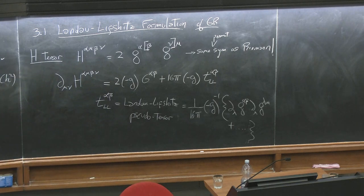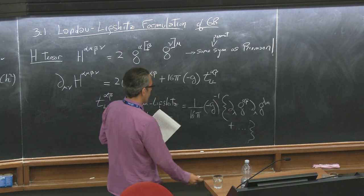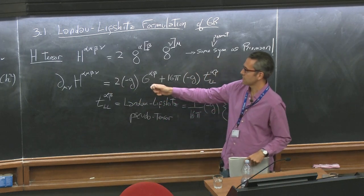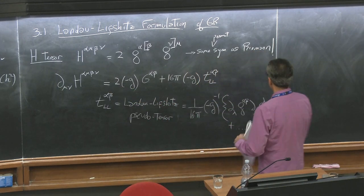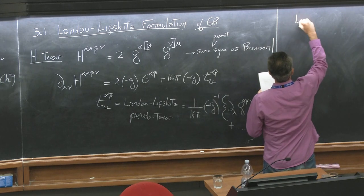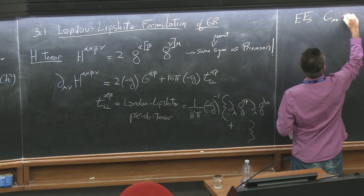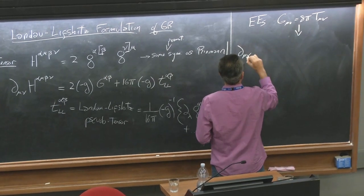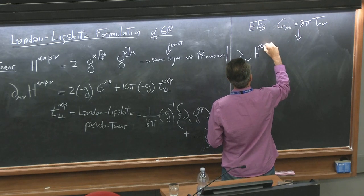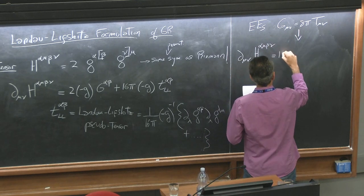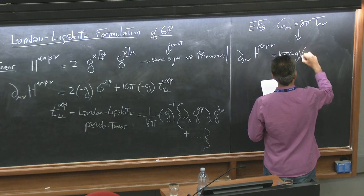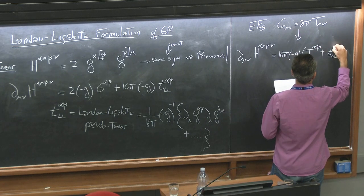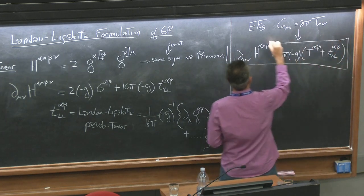Since this is true, I can use the Einstein equations to re-express G-alpha-beta in terms of the stress-energy tensor. The Einstein equations — G-mu-nu equal 8-pi T-mu-nu — become: d-mu-nu partial derivatives on this H tensor alpha-mu-beta-nu equals 16 pi times (minus G times T-alpha-beta plus Landau-Lipschitz-alpha-beta). Those are your Einstein equations now.